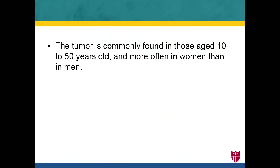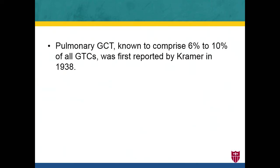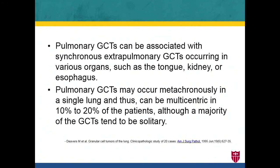Granular cell tumors are seen in patients ranging from 10 to 50 years of age, more commonly in the third to fourth decade, and more commonly in women than men. Pulmonary granular cell tumors comprise about 6 to 10 percent of all granular cell tumors. First reported by Dr. Kramer in 1938, there have been only around 100 cases reported so far. There have been cases associated with various organs — tongue, kidney, esophagus — and it can occur metachronously in a single lung as well.